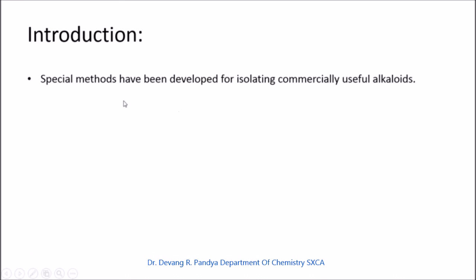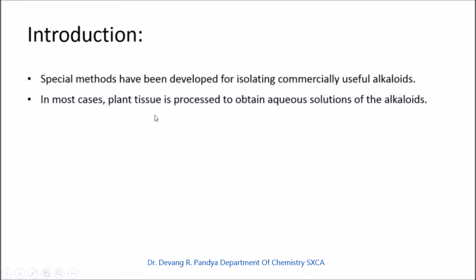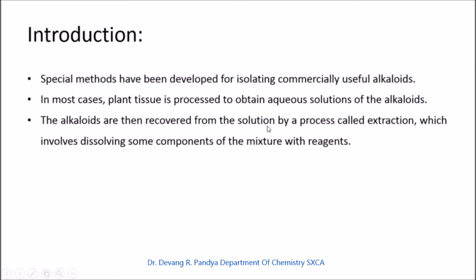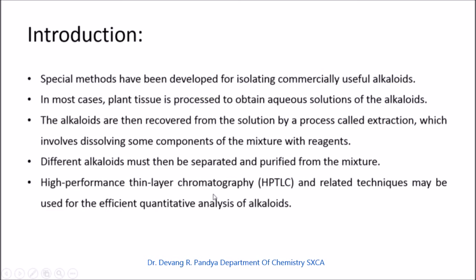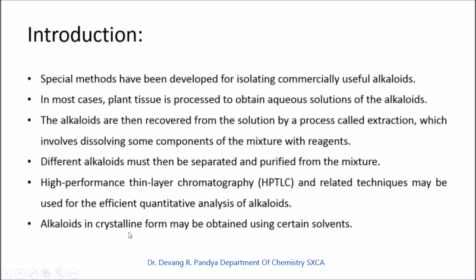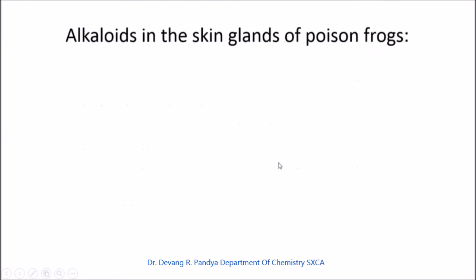Special methods have been developed for isolating commercially useful alkaloids. In most cases, plant tissue is processed to obtain an aqueous solution of alkaloids, which are then recovered by extraction — dissolving components with appropriate reagents. Different alkaloids must then be separated and purified. High-performance thin-layer chromatography (HPTLC) and related techniques are used for efficient quantitative analysis, and alkaloids in crystalline form may be obtained using certain solvents.